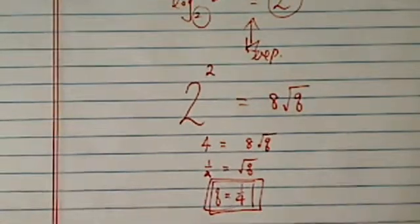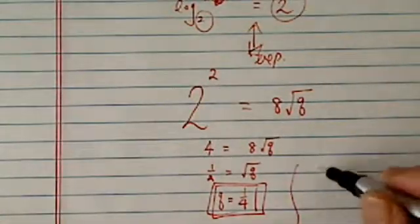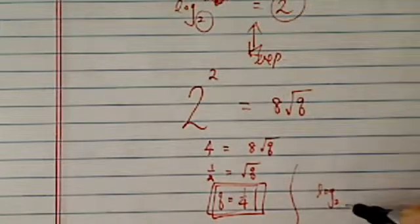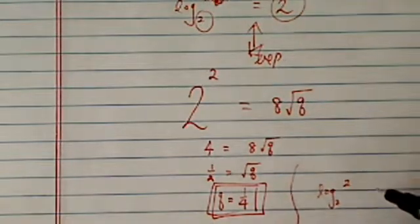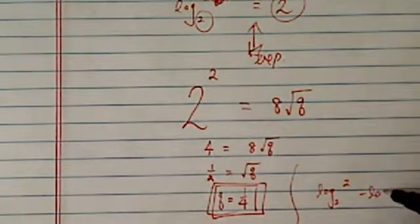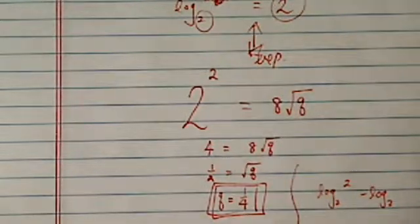Now let's check our work. Log base 2 of 8 times q, which is 2, that's 1, minus log base 2 of radical 1 quarter,